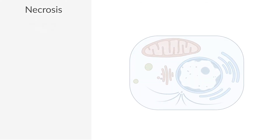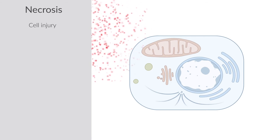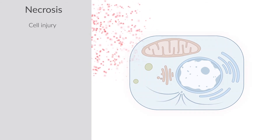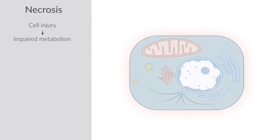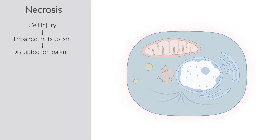Necrosis is caused by cell injury and disrupts cellular function. For example, necrosis occurs in cardiac cells during a heart attack as a result of decreased blood flow and oxygen. Damage to the cell impairs energy production, disabling cells from controlling their fluid and ion balance. As a result, the cell starts to swell.